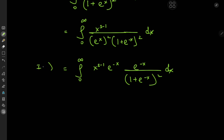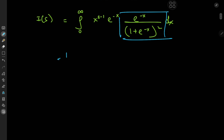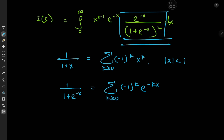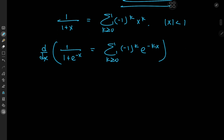Now I'd like to determine a series expansion for this function. For that, I'm going to reference the geometric series. Recall that we can expand the reciprocal of 1 plus x as the sum over non-negative integers k of negative 1 to the k times x to the k, provided that the absolute value of x is less than 1. Here e to the negative x satisfies this criterion on our interval of integration, so the reciprocal of 1 plus e to the negative x can be written as the sum over k of negative 1 to the k times e to the negative kx. But that's not exactly the function I need — I need e to the negative x divided by 1 plus e to the negative x, squared. I can recover this function by differentiating, which is something you can do with infinite series expansions.